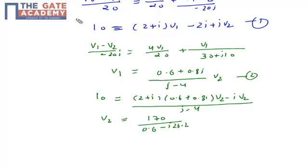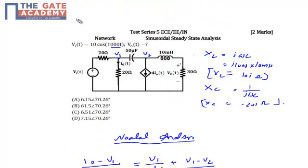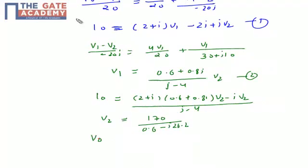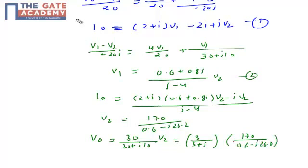Clearly my V0 is basically a part of V2. It's a current RL network so my V0 will be equal to R times V2 upon (R plus XL). Simple current divider in this path. So my V0 will be equal to 30 upon (30 plus j10) times V2, which will be equal to 3 upon (3 plus j) times 170 upon (0.6 minus j26.2).